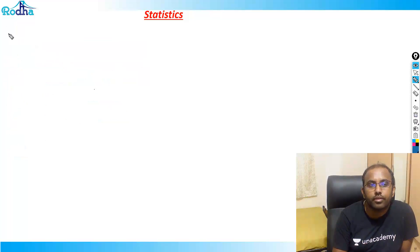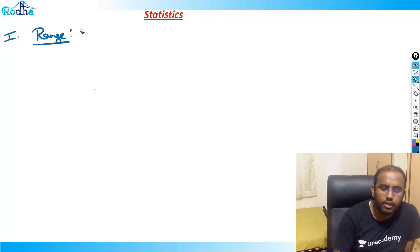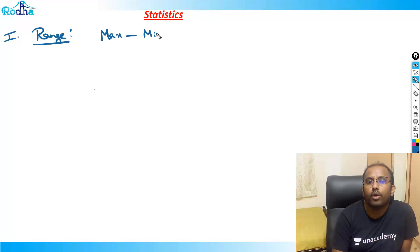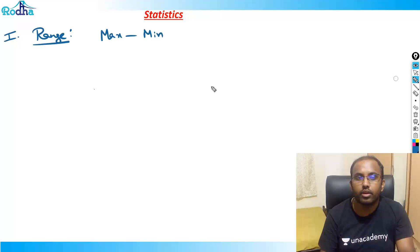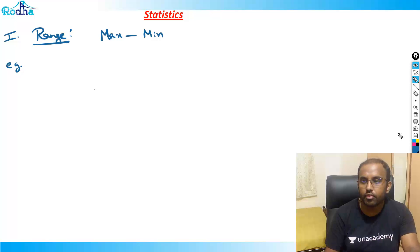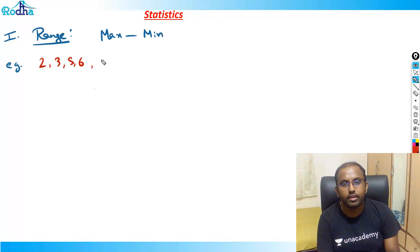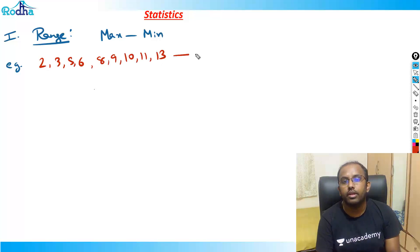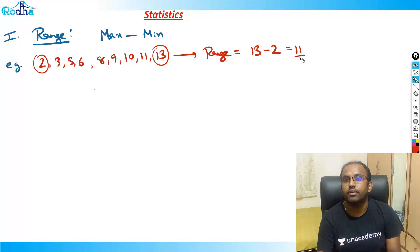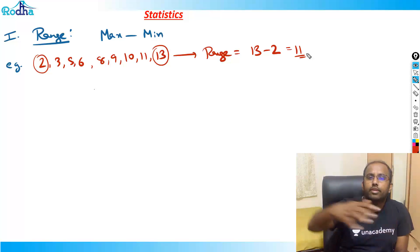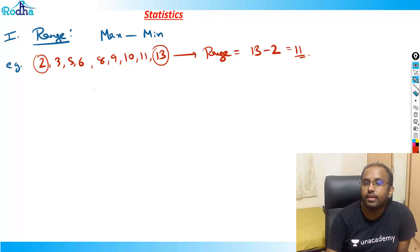First is Range — quite simple. This has nothing to do with the range in functions and graphs. It is simply maximum minus minimum in any data. For example, for data: 2, 3, 5, 6, 8, 9, 10, 11, 13 — the range is 13 minus 2 = 11.